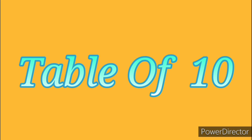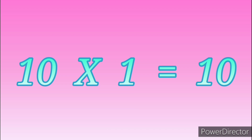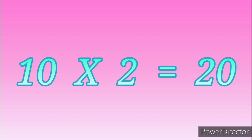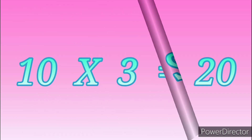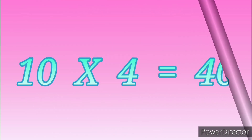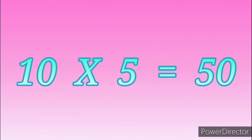Table of Ten. Ten ones are ten. Ten twos are twenty. Ten threes are thirty. Ten fours are forty. Ten fives are fifty.